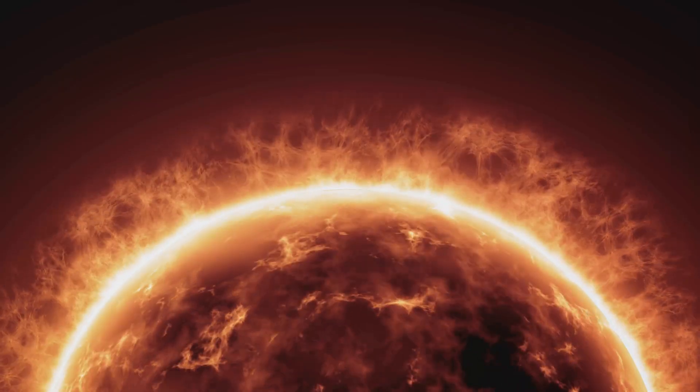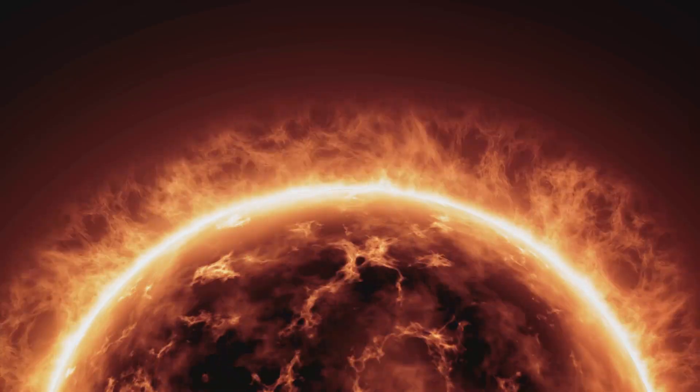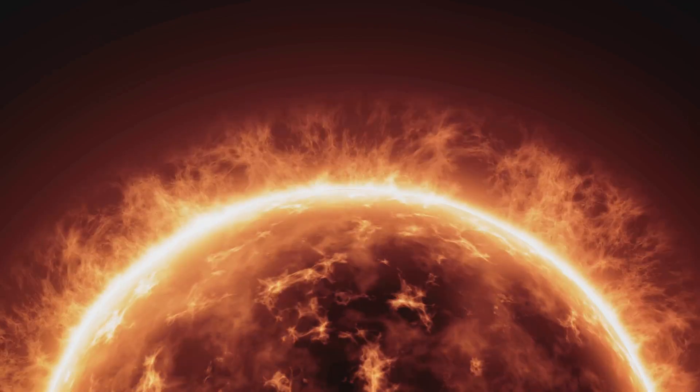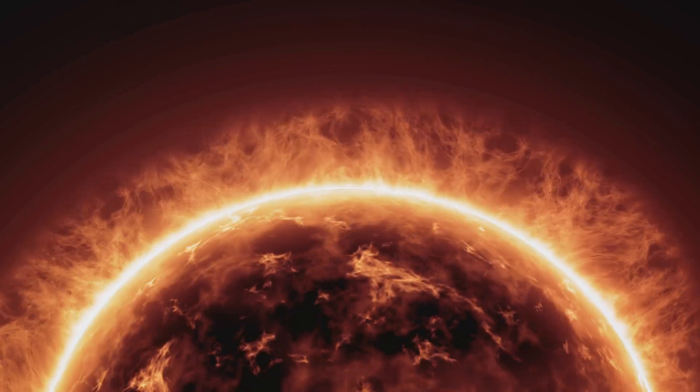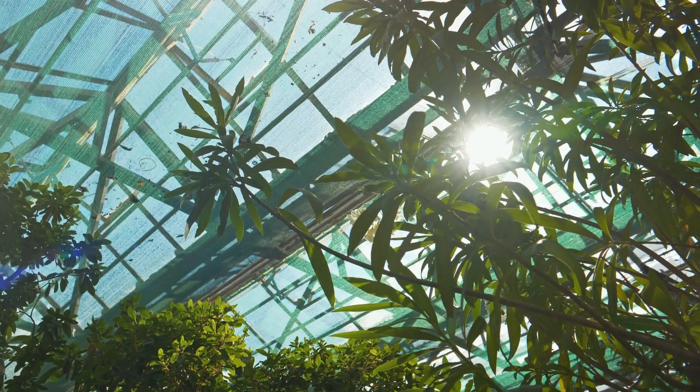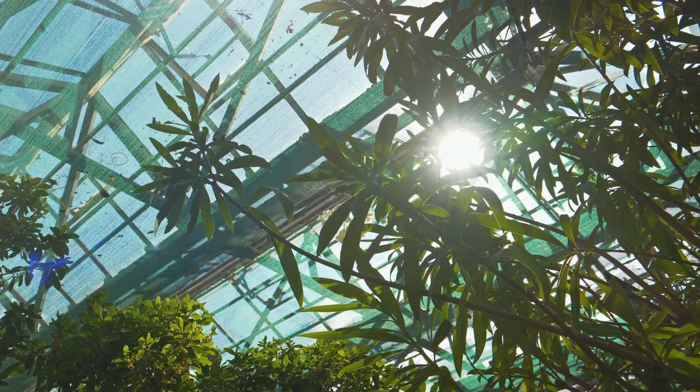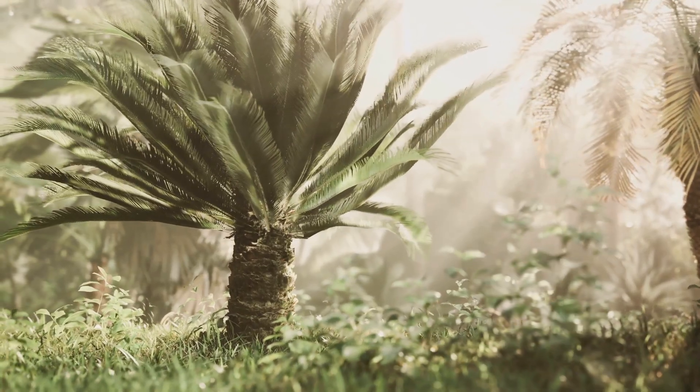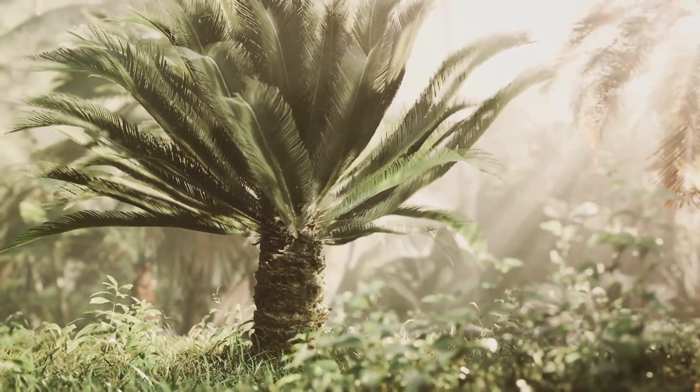The stars that we gaze at in wonder might be outshone by the brilliance of our dual suns. Life forms too would need to adapt to this new reality. Plants, which rely on sunlight for photosynthesis, could potentially thrive in a world of constant daylight. However, they would also need to adapt to the increased heat and potentially altered rainfall patterns.